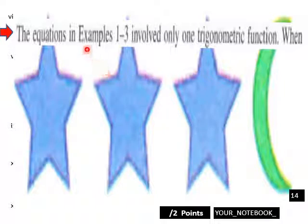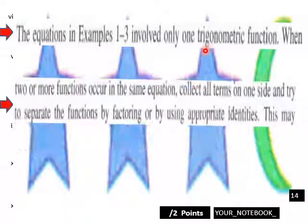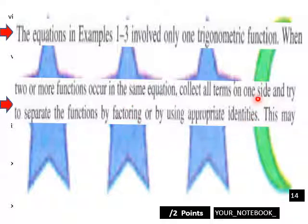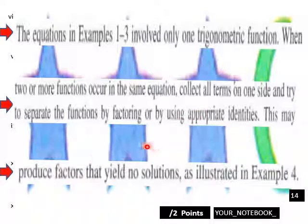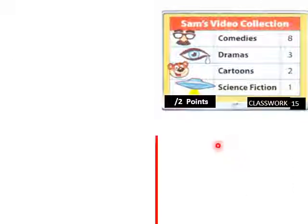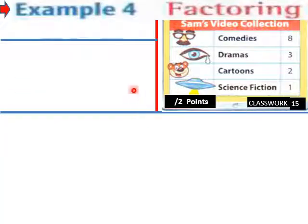In your notebook: the equations in examples 1 through 3 involved only one trigonometric function. When two or more functions occur in the same equation, collect all terms on one side and try to separate the functions by factoring or by using appropriate identities. This may produce factors that yield no solution, as we will find out in this example.